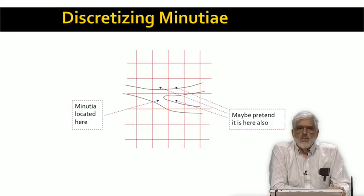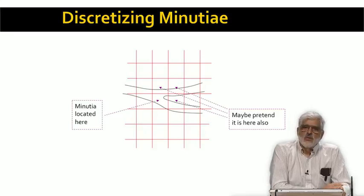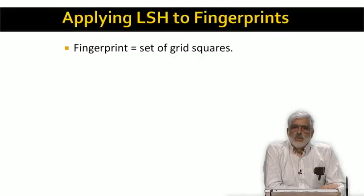However, we might also want to add the squares that are very close to the exact point of merger, because in another image of the same fingerprint the grid might be shifted slightly to the left or down. Remember that we represent fingerprints by sets of grid squares — those with minutiae.